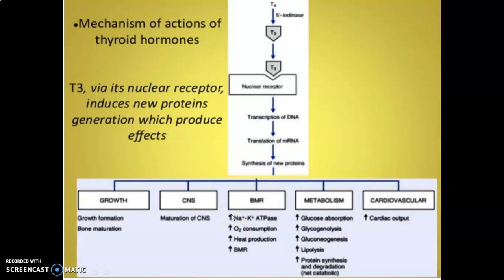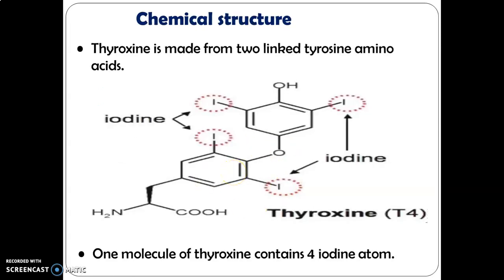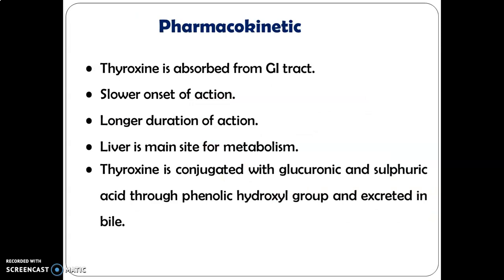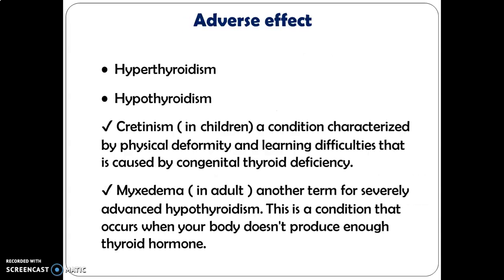Thyroxine (T4) is mainly produced by the thyroid gland and is carried to the liver and kidney where it is converted to the active form T3. Pharmacokinetically, thyroxine is absorbed from the GI tract, has a slower onset of action, and a longer duration of action. The liver is the main site of metabolism, where thyroxine is conjugated to glucuronic acid and sulfuric acid through the phenolic hydroxyl group and excreted in bile. T4 is peripherally deiodinated to form T3, which exerts stimulatory effects on cell metabolism.